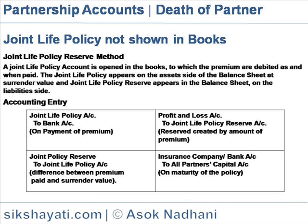The accounting entries for the Reserve Method are: Joint Life Policy account debit to bank on payment of premium; Profit and loss account to Joint Life Policy Reserve account for reserve created by the amount of premium; Joint Life Policy Reserve to Joint Life Policy account for the difference between premium paid and surrender value; and insurance company or bank account to all partners' capital account on maturity of the policy. Joint Life Policy and Joint Life Policy Reserve accounts will stand in the books at surrender value.